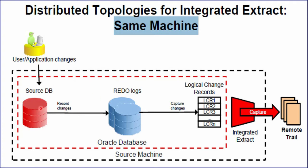This is the source database. The change vector information is retrieved from the source database and shipped to the Redo Log file on the same machine. From the Redo Log file, the data is converted into the LCR format, and Integrated Capture reads the LCR format and ships the data over the network to the remote trail file. Remote file is generally used in the initial load, and trail is used in the capture mode.